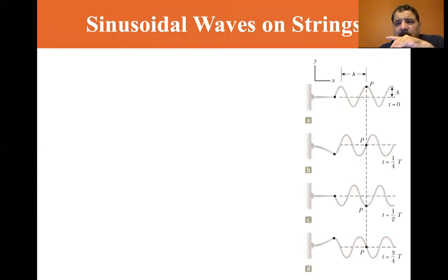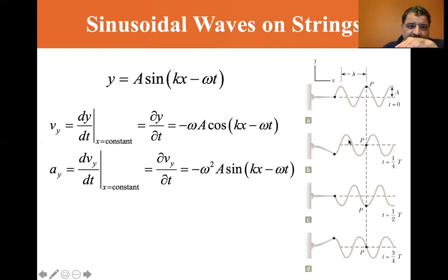So sinusoidal waves on the string. Let's see what we have. Y equals A sine K X minus omega T. You can see the as the little actuator goes up and down. It's generating this sinusoidal wave. And you can see the P, P always stays at the same vertical position, but it does move up and down with the wave.